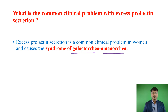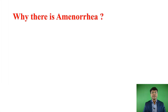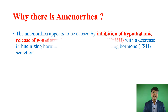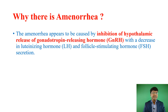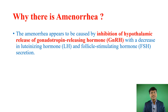Why is there amenorrhea in patients with hyperprolactinemia? Because this excess prolactin inhibits the hypothalamic release of GnRH — gonadotrophin releasing hormone. When excess prolactin inhibits hypothalamic GnRH, there is no secretion of FSH and LH from the anterior pituitary. Subsequently, when there is no FSH and LH secretion, there will be no menstruation, leading to amenorrhea.